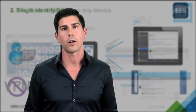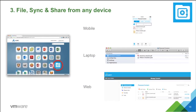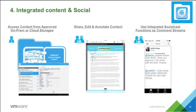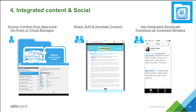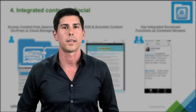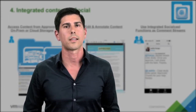As users move between devices, their data should follow them — they should have a consistent view of their data irrespective of the device they're using. Finally, we're embedding social in all the different things an end user consumes. A big part of that is content — we see an opportunity to embed social so content can make recommendations about files or data a user might be interested in. For example, if they're working with a team using a particular file, the system can recommend that file to them.